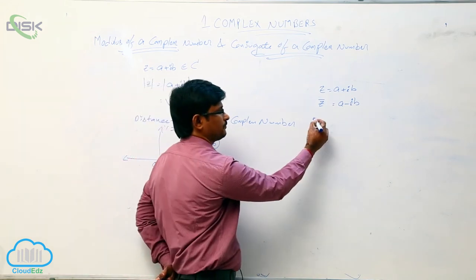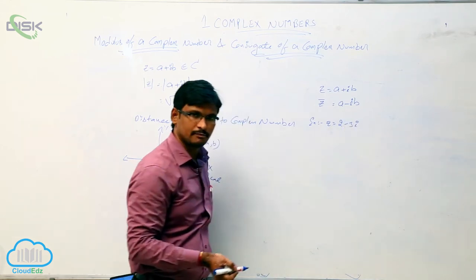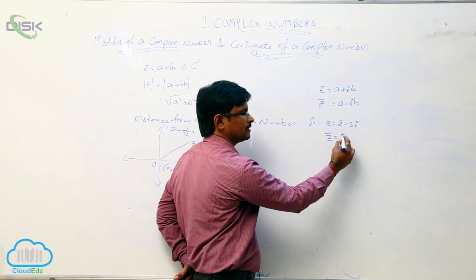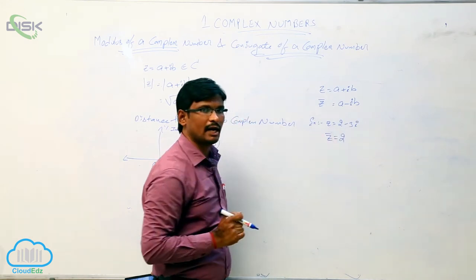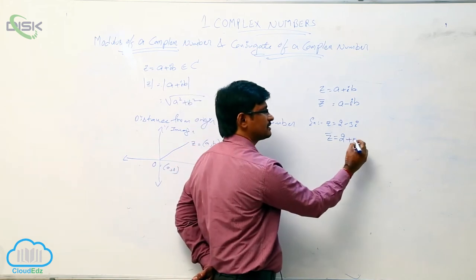Example, if z equal to 2 minus 3i is one complex number, what is the conjugate of this one? That is 2. Here, what is the imaginary part we have? Minus 3. What is the opposite of minus 3? Plus 3i. So this is the conjugate.